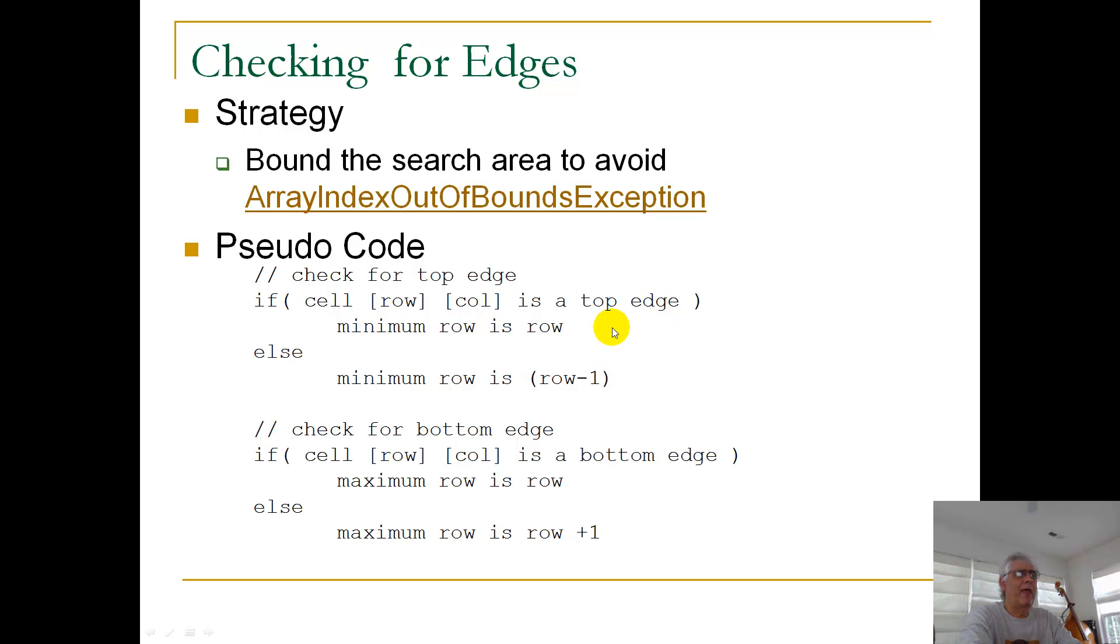That means that the minimum row where I can check for neighbors, the minimum row index where I can check for neighbors, is just the index of the row I'm in.